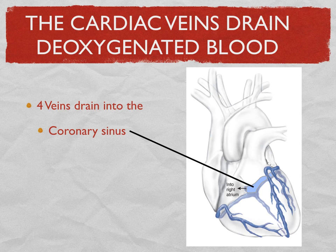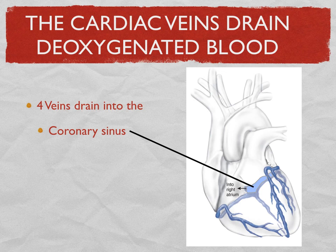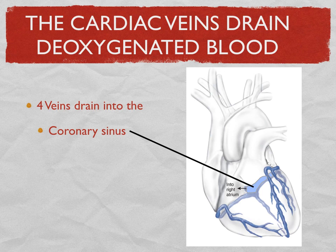We're going to find the coronary sinus in the heart when we dissect today. Since this is all deoxygenated blood, we want to get it more oxygen, so it's going to go into the right atrium so it can go back to the lungs. In the right atrium there's an opening for the superior vena cava, an opening for the inferior vena cava, and there's always a third opening from the heart itself — the opening from the coronary sinus — allowing deoxygenated blood to mix with all the other systemic blood and then be pumped to the lungs.